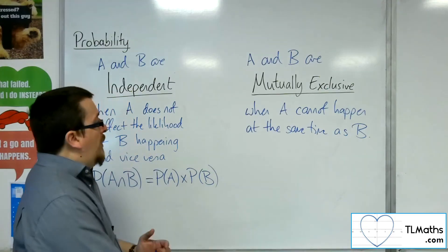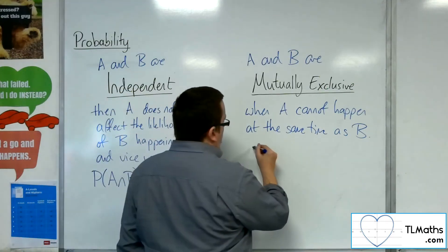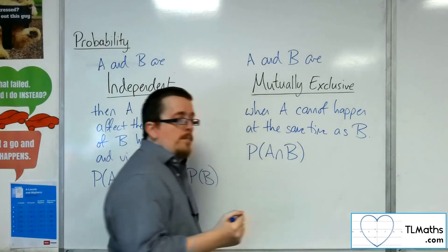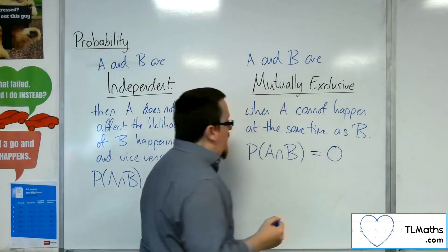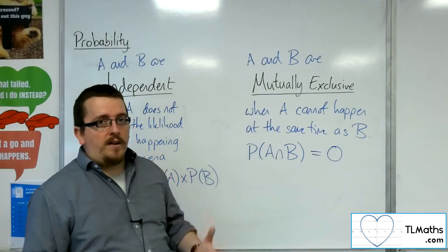So the consequence of that is that the intersection of the two must therefore be zero. There is no way that you can have A and B happening at the same time.